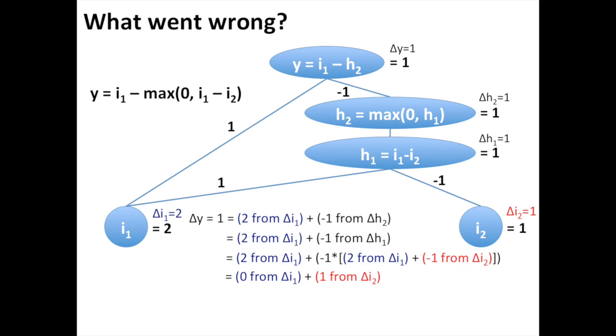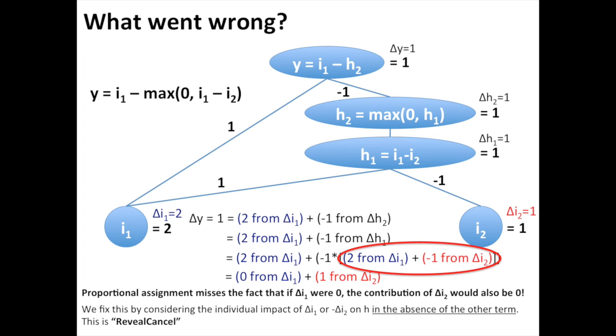So what went wrong? We posit that the issue lies here. By assigning contributions to delta i1 and delta i2 proportionally to their input values, we miss the fact that if delta i1 were 0, the contribution of delta i2 would also be 0. We fix this by considering the individual impact of delta i1 or negative delta i2 on h in the absence of the other term. This is the basis for the reveal-cancel rule.